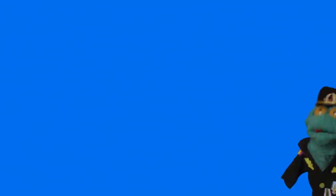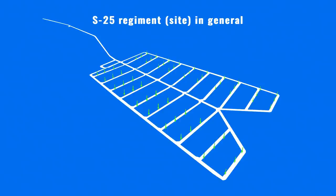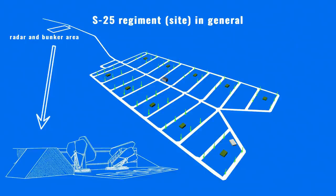A single S-25 Berkut site had 60 missiles in ready-to-launch state, stored in vertical position in case of alert. The launch stations were connected via roads, so reloader trucks could reload empty launch positions or transport missiles to maintenance depots. Small bunkers were constructed close to the missiles — one such bunker per every six missiles — used for launch preparation and other tasks. The core of the S-25 Berkut site is the control bunker with the electronic components, the B-200 Yo-Yo fire control radar system and the guidance command antennas, all placed some distance away from the missile launchers.